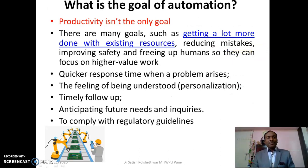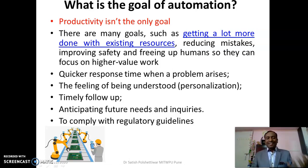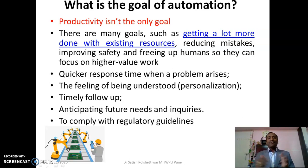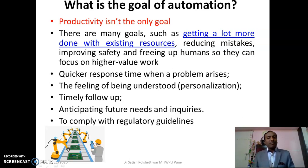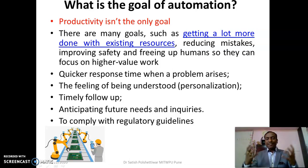The goal of automation is not only productivity. We need to improve the quality of products in order to reduce risk, reduce failure, and reduce cost and time. There are many goals: getting more done with existing resources, reducing mistakes, improving safety, and freeing humans to focus on higher-value work. Human input is still essential — even with automation, we need human minds to provide feedback and set parameters.